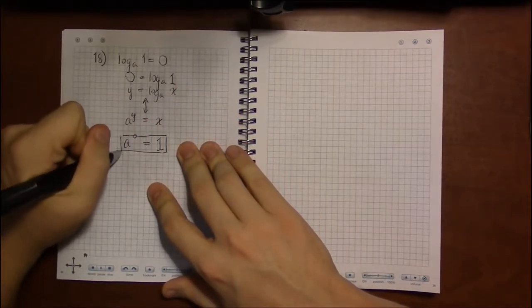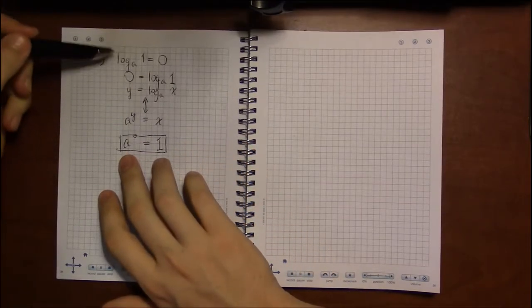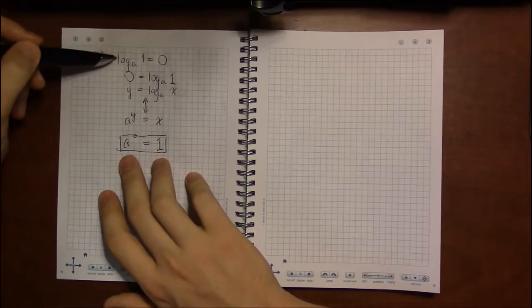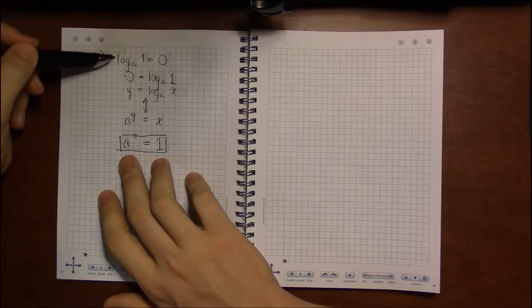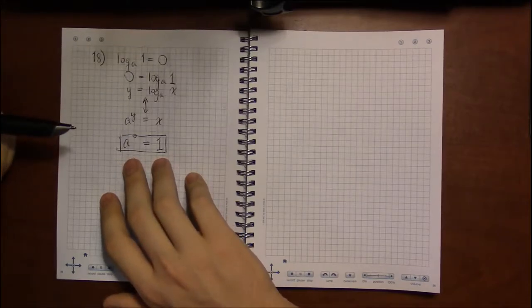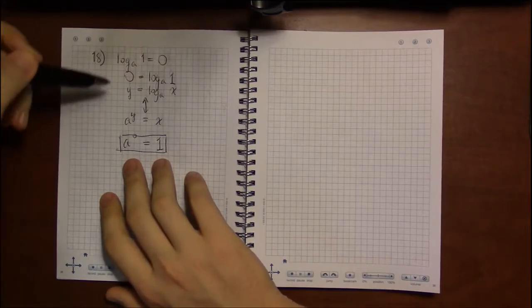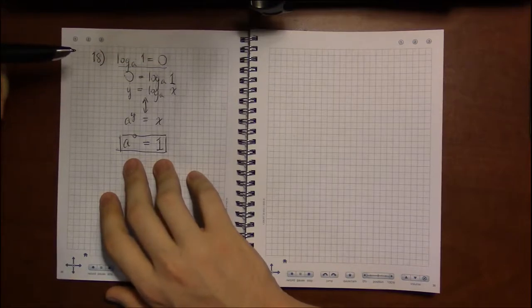So saying that a to the 0 equals 1, that's what we were saying when we state that log base a of 1 is 0. This is the same thing as a to the 0 equals 1. This is an exponential property, and it turns out this is going to be a logarithmic property.